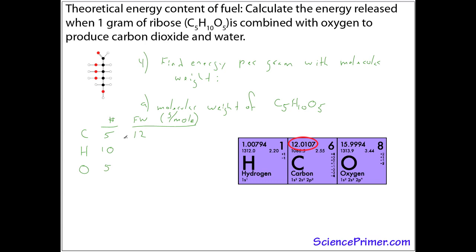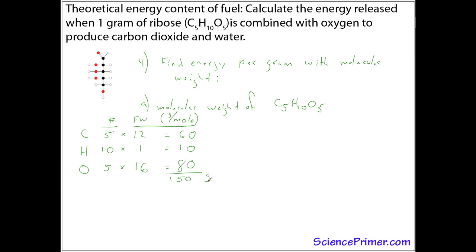So there are 5 carbons. The atomic weight of carbon is 12. 5 times 12 is 60. 10 hydrogens. Atomic weight of 1. So a total of 10 for hydrogen. And 5 times 16 for oxygen gives us 80. So the formula weight of ribose is 150 grams per mole.